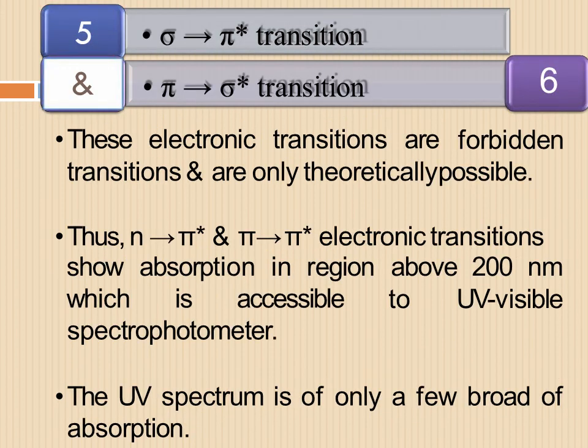Next, fifth and sixth, that is sigma to pi star and pi to sigma star. Both of these transitions are symmetrically forbidden, hence they are called forbidden transitions. These electronic transitions are forbidden transitions and are only theoretically possible. Thus, n to pi star and pi to pi star electronic transitions show absorption in region above 200 nanometer, which is accessible to UV visible spectrophotometer.